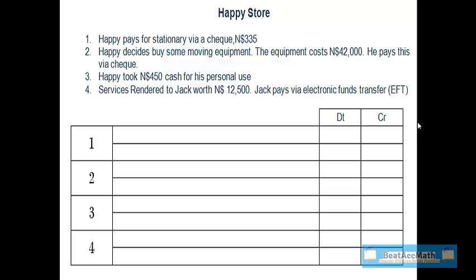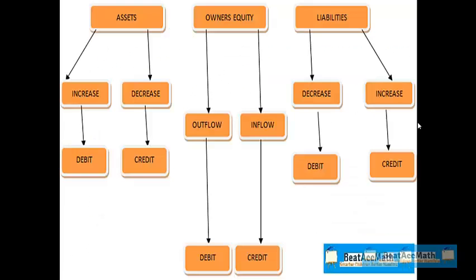The first transaction in Happy Store reads as follows: Happy pays for stationary via a check for $335. First we need to decide which two items are involved. The one is stationary and since Happy is paying with a check, it's bank. Bank is an asset and he's giving out money. Following our accounting equation map, when an asset decreases we put it on the credit side. Stationary is an owner's equity item — it's an outflow because money is flowing out of the bank account, therefore we should debit our stationary account.